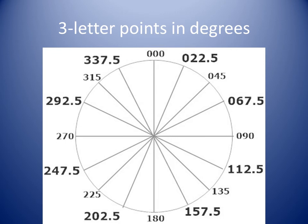The three-letter points expressed in degrees are as follows. North-northeast is zero two two point five degrees. East-northeast is zero six seven point five degrees. East-southeast is one one two point five degrees. South-southeast is one five seven point five degrees. South-southwest is two zero two point five degrees. West-southwest is two four seven point five degrees. West-northwest is two nine two point five degrees. North-northwest is three three seven point five degrees.